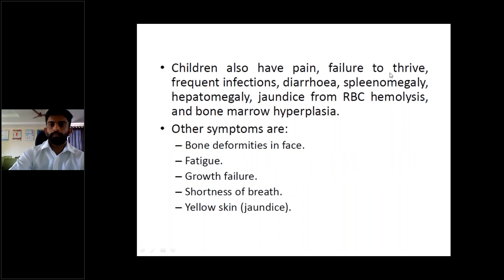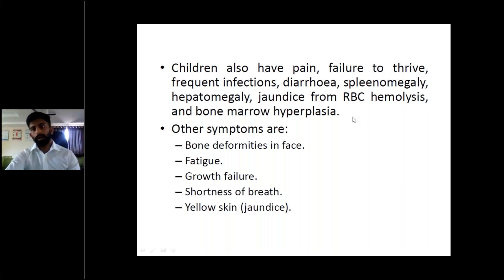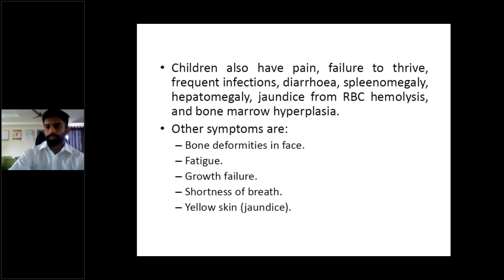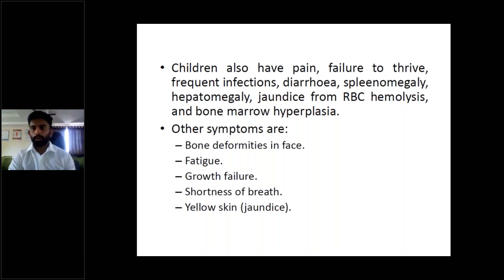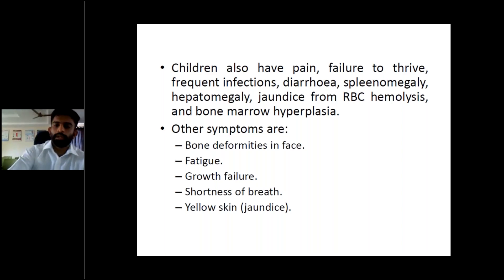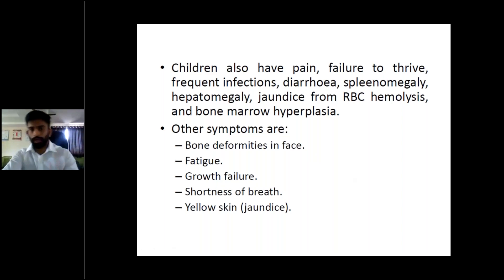Children with thalassemia also have pain, failure to thrive, frequent infections, diarrhea, splenomegaly, hepatomegaly, jaundice from RBC hemolysis, and bone marrow hyperplasia. When defective RBC production occurs due to defective hemoglobin synthesis, there is a compensatory bone marrow response leading to bone marrow hyperplasia, growth of bone marrow in long and short bones, hypertrophy of bones, splenomegaly, hepatomegaly, and jaundice. Other symptoms include bone deformities of the face — hemolytic facies — fatigue, and growth failure, as bone marrow and bones are utilized for RBC production.